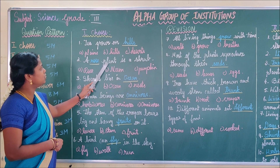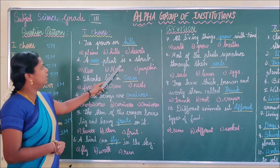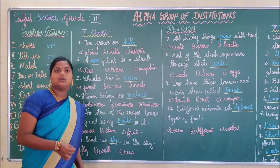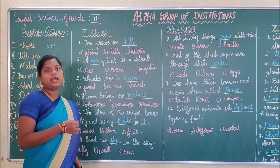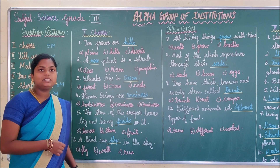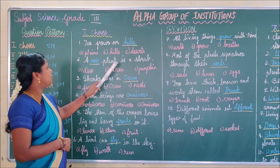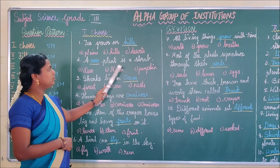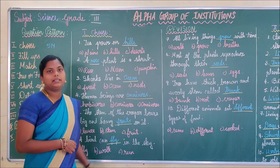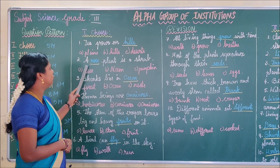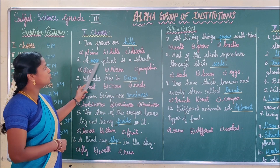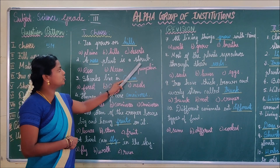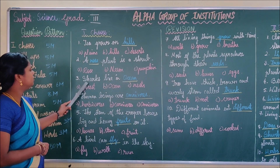Next question: A blank plant is a shrub. So now they are asking you a kind of plant which is a shrub — Rose, Neem, or Tonkin? A rose plant is a shrub.